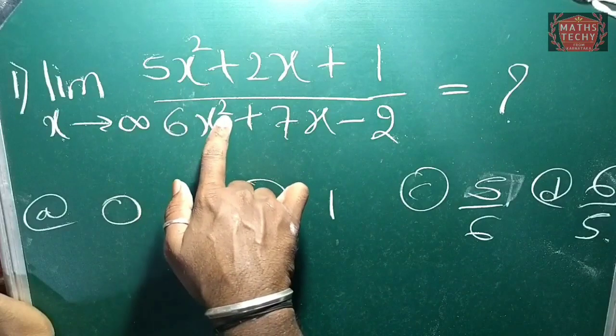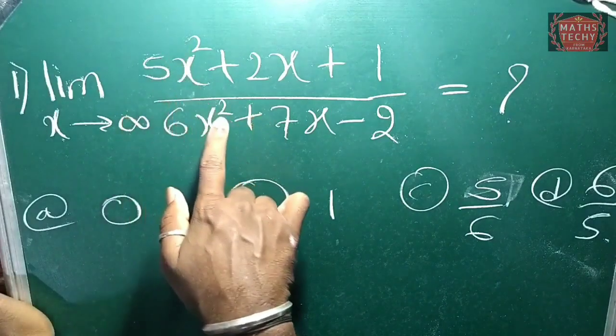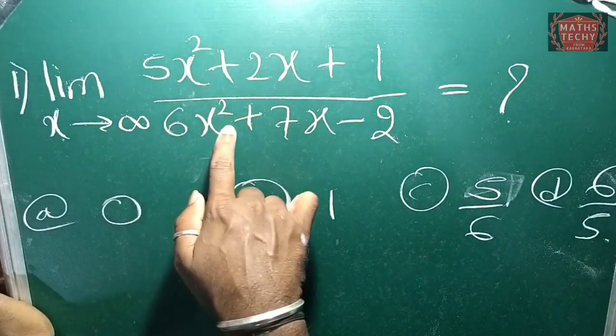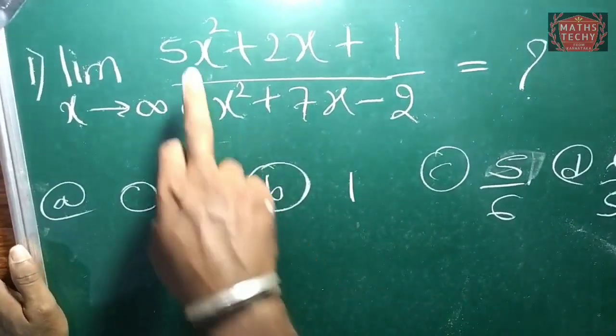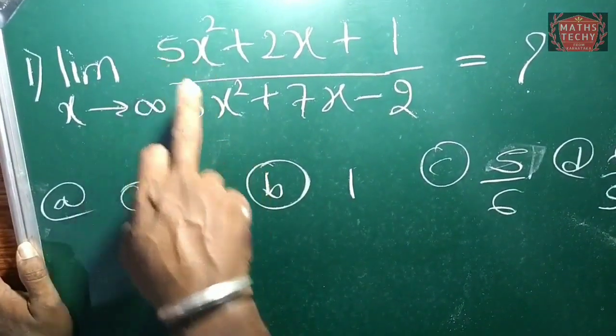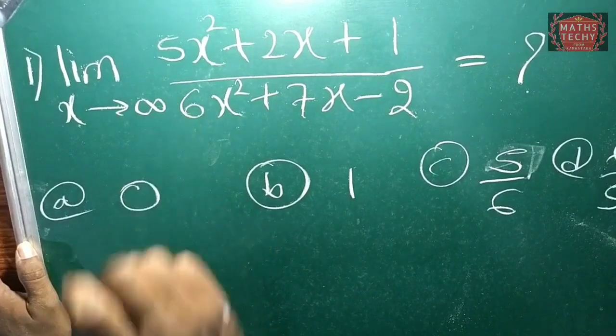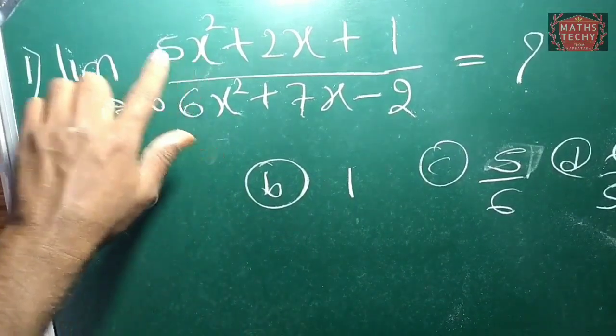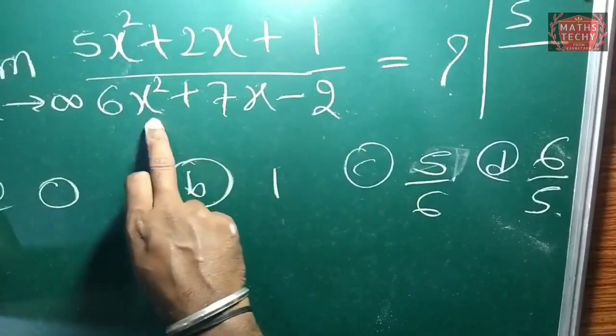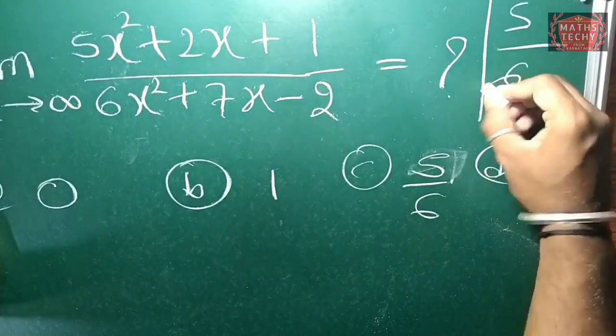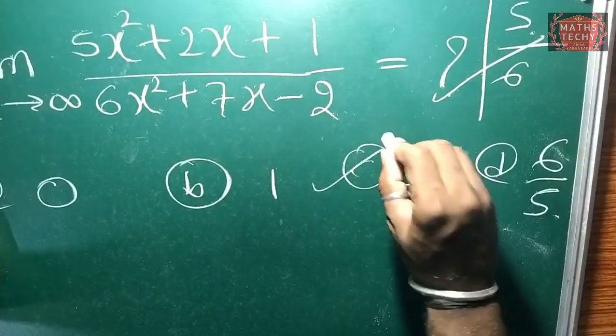Denominator and degree is 2. Numerator and denominator are equal. Equal is equal. This answer is equal. The other coefficient and denominator is equal. What is x-square coefficient? 5. So what is x-square coefficient in the denominator? 6. So the answer is 5 by 6. So the option C is correct.